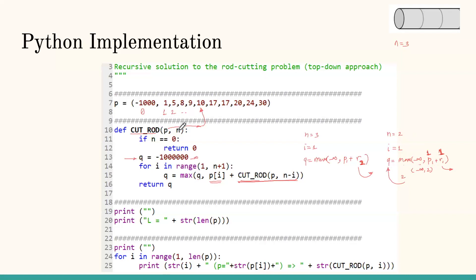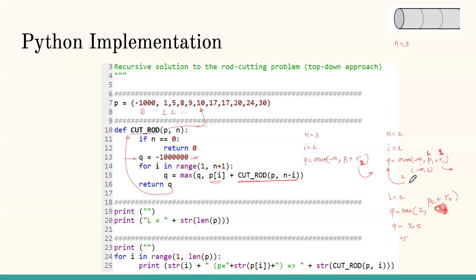Back in the n=3 call with i equals one: P_1 plus R_2 = 1 + 5 = 6, so Q = 6. This means if we cut a rod of length three at the first place, the revenue is six dollars: the first piece gives one dollar and the remaining two inches gives five dollars, totaling six.